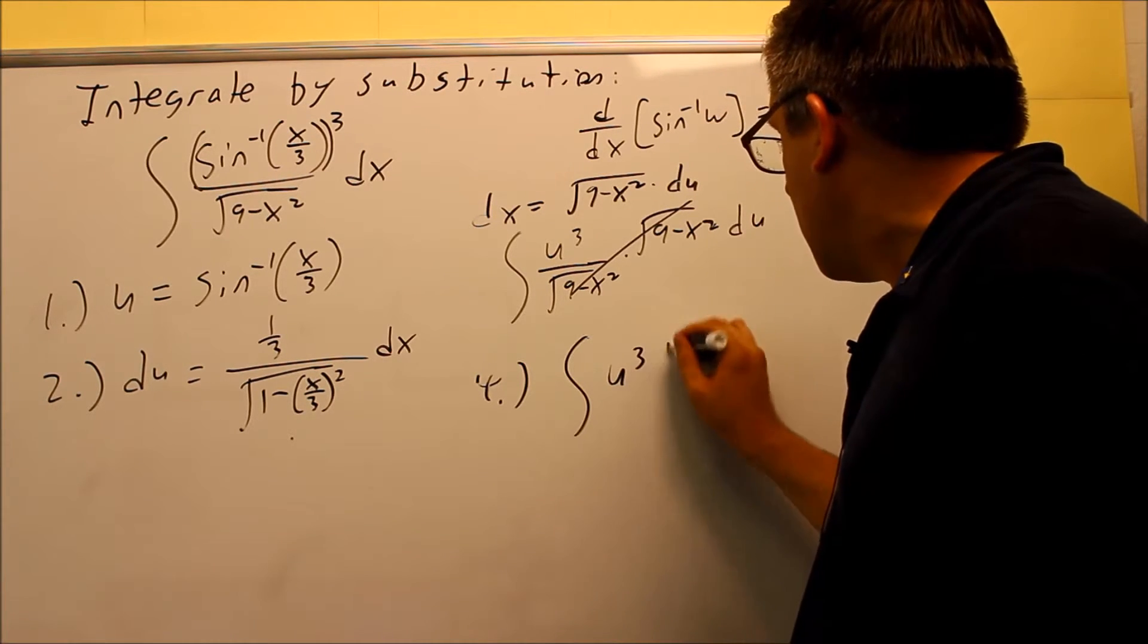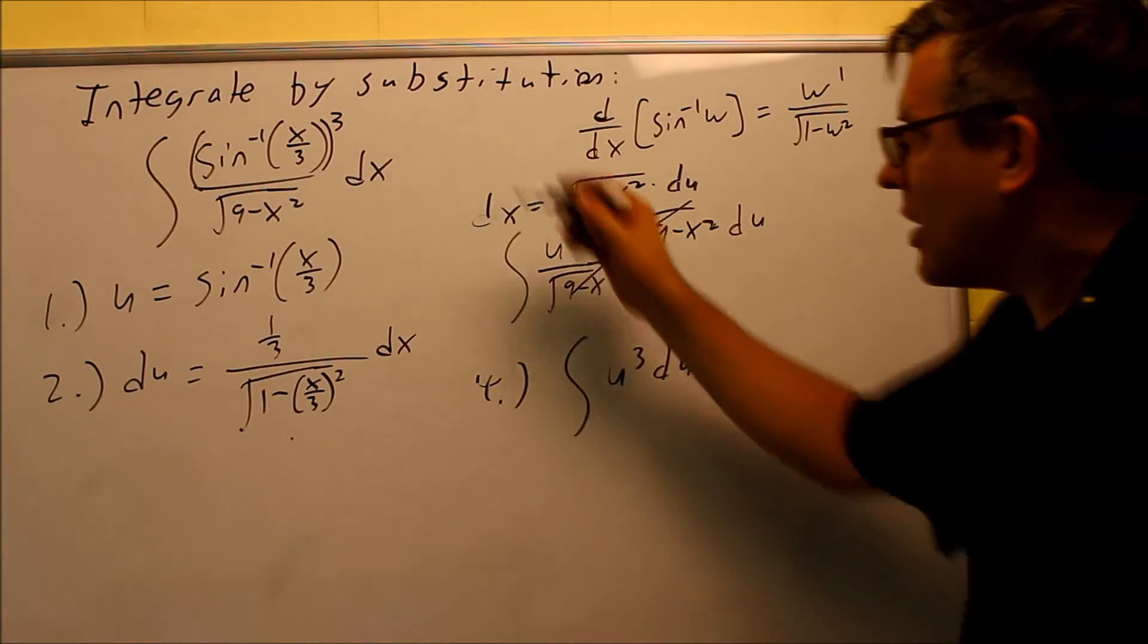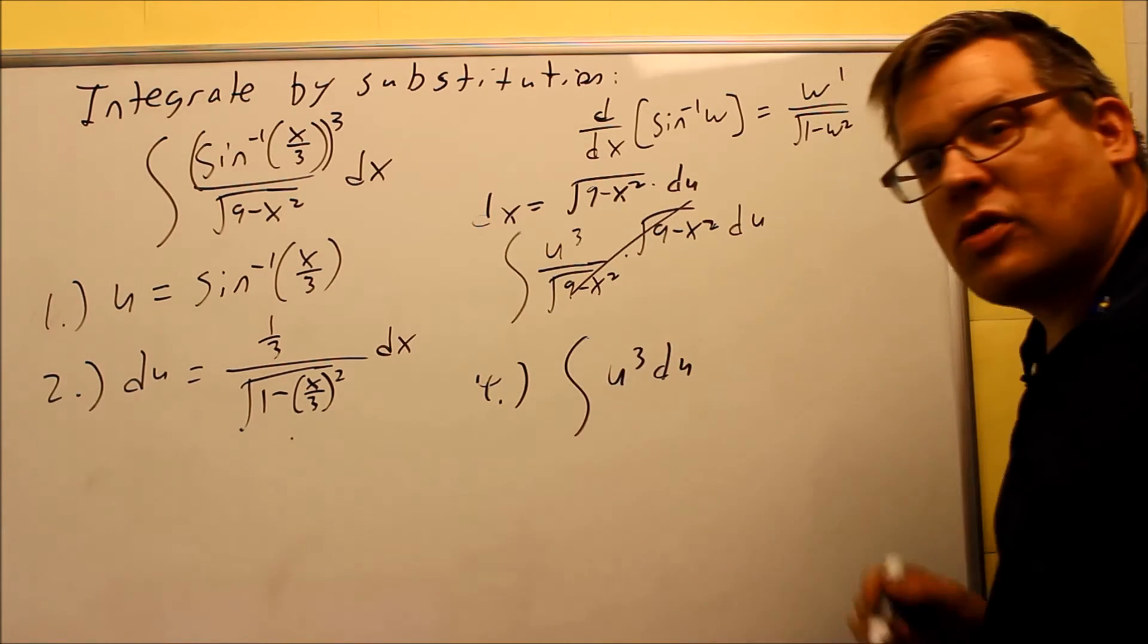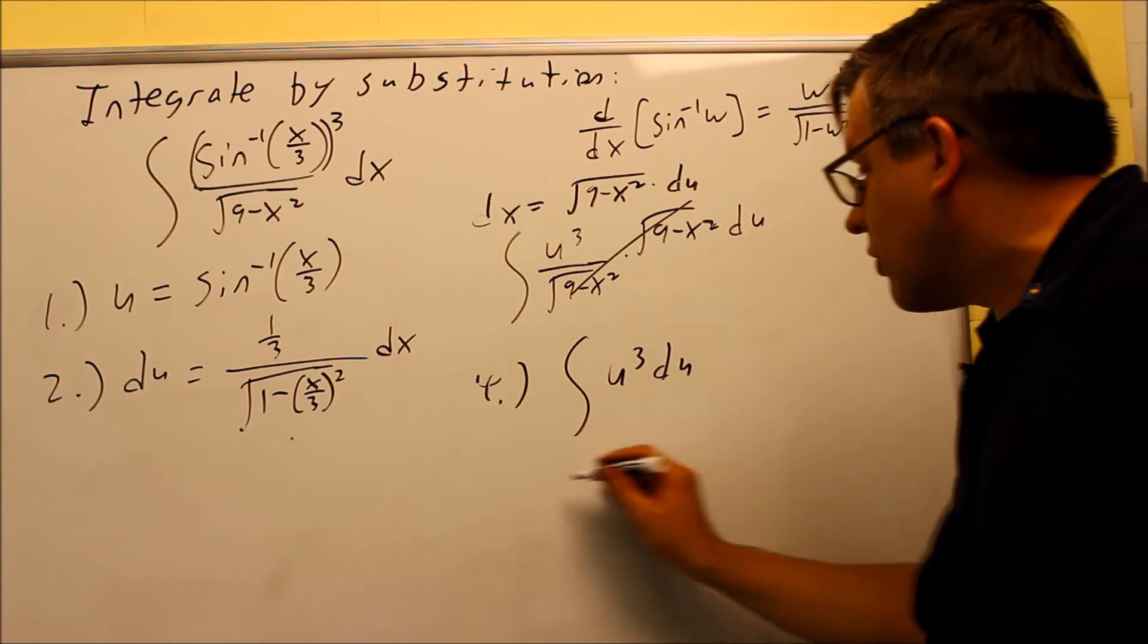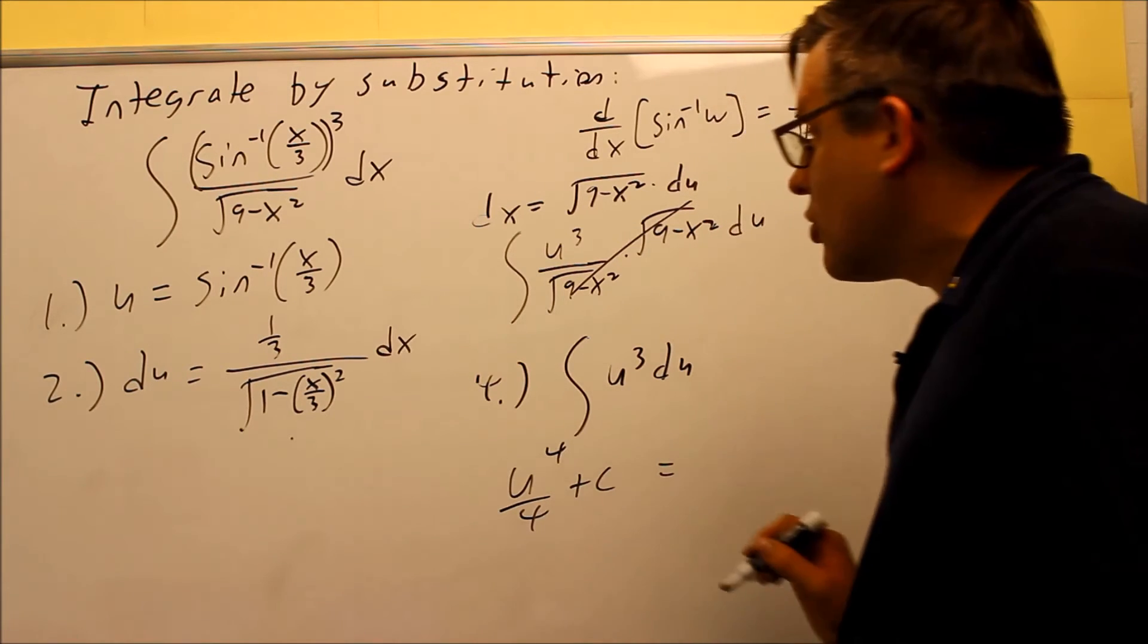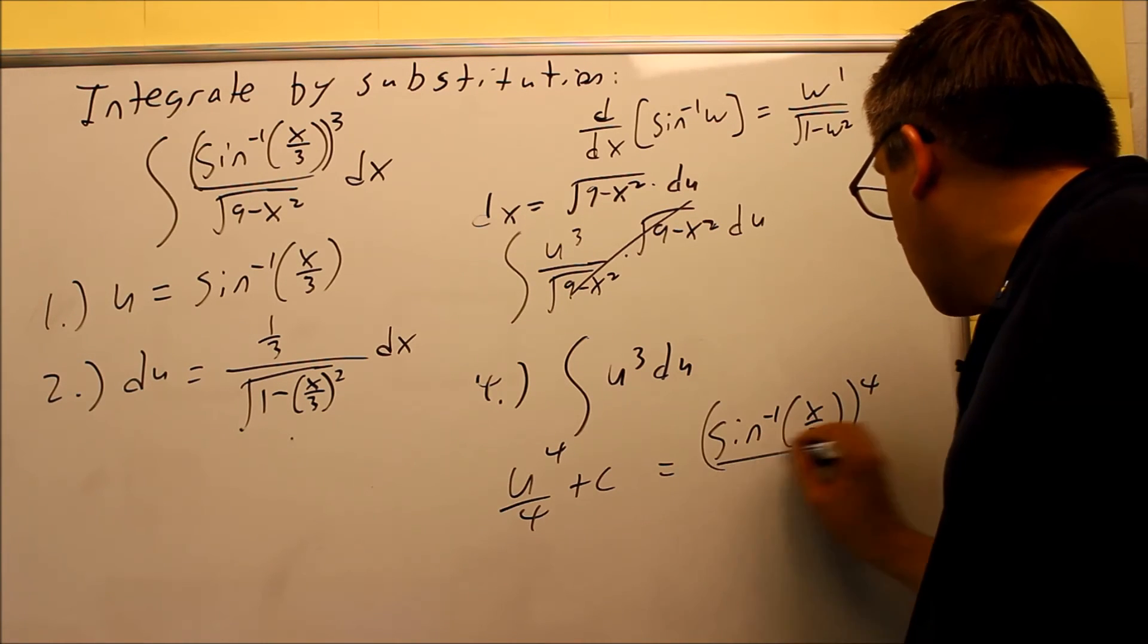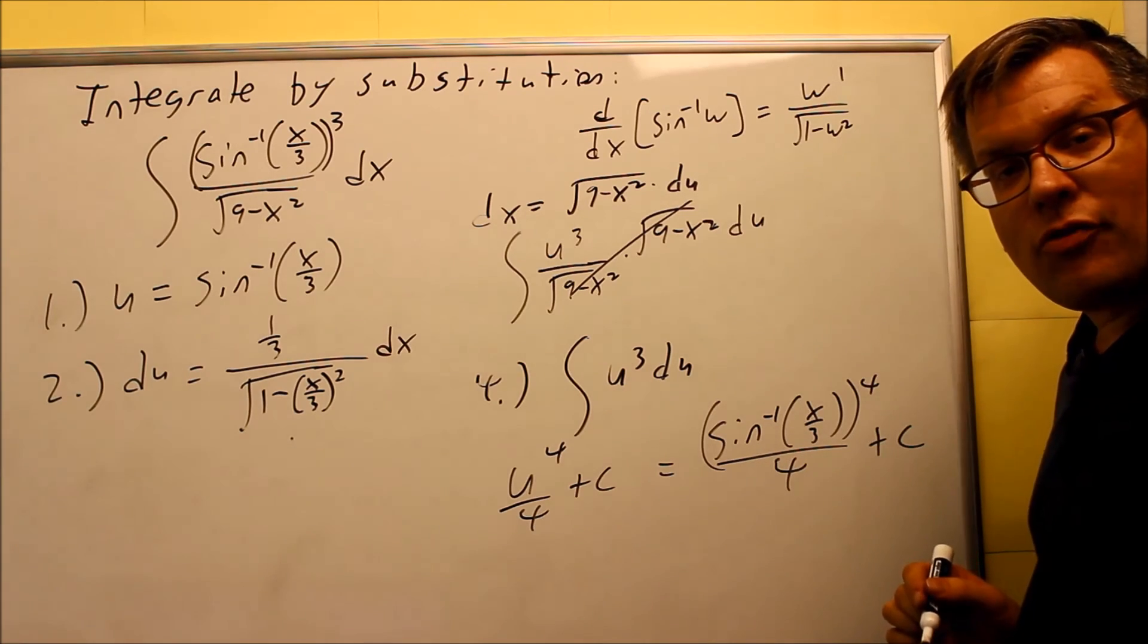That's going to leave us with just this. We have the integral of u cubed. So that's how you can make something that looks complicated into something easier, that's the idea of substitution. It allows you to be able to do these integrals a lot easier. Now, we can take the antiderivative, you get u to the fourth over 4 plus c, which if we put the inverse back in, we get the inverse sine of x over 3, all that's raised to the fourth power over 4 plus c, and this right here is going to be your final answer.